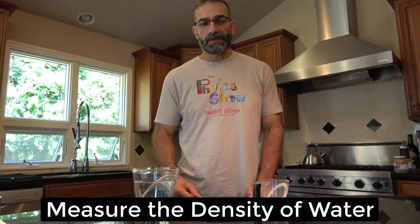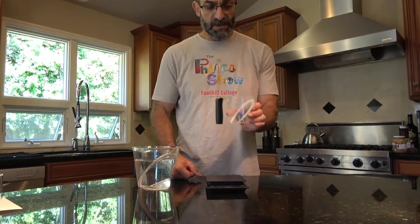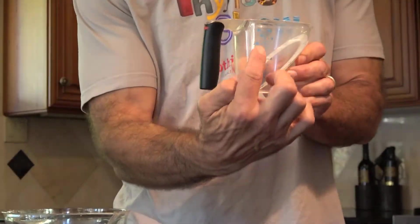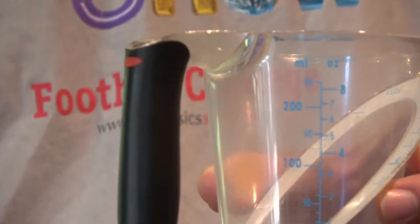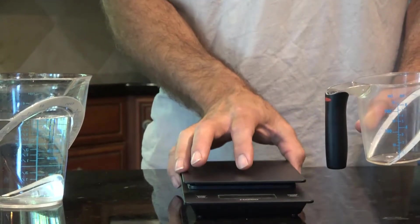To measure the density of water, we need to know the volume and then we need to weigh it. So I've got a measuring cup here that's marked in milliliters. That's the same as cubic centimeters, and I have a scale or a balance.